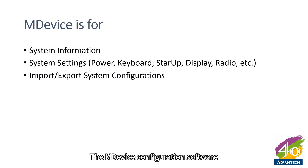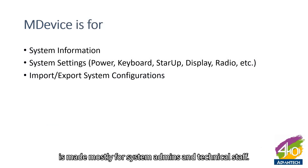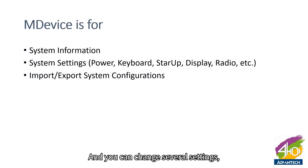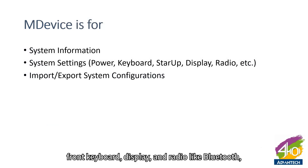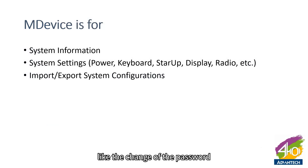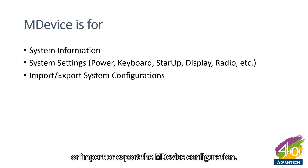The M-Device configuration software is made mostly for system admins and technical staff. You can get several system informations like temperature, running time, or battery information, and you can change several settings like power and startup settings, front keyboard, display, and radio like Bluetooth, Wi-Fi, and so on. You also have several configurations for M-Device internally, like changing the password or importing and exporting the M-Device configuration.